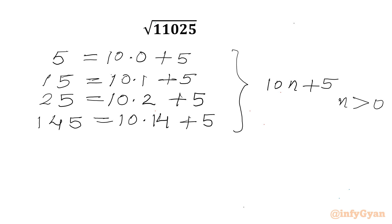So I can write square root of 11,025 will be equal to 10n plus 5, where n must be positive. Now we will consider squaring both sides.